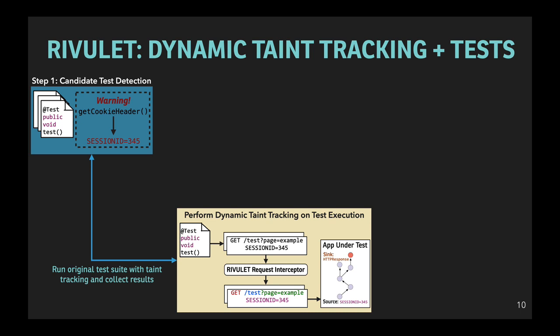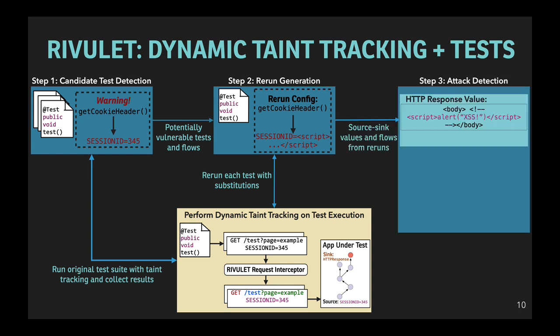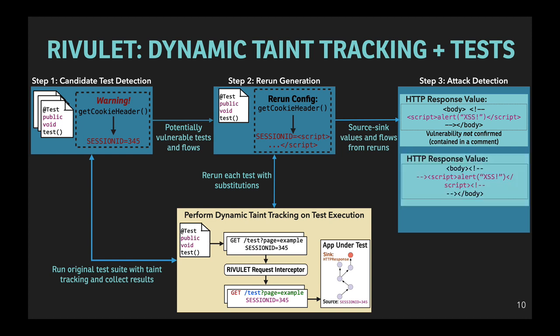So for each of these candidate tests, Rivulet then cleverly reruns them, but modifying the values supplied by the test case — in this case changing the session ID variable to an attack string. The modified test is executed again with taint tracking, and this time, if the new malicious input flows into the HTTP response, Rivulet examines the entire response to determine if an attack really occurred. This step is important because simply seeing tainted data flow to a vulnerable method call does not imply an attack. In the first example here, the attack string is contained in a comment, and hence not a successful attack. When Rivulet generates an attack string that does defeat the comment, however, the vulnerability is confirmed, and Rivulet generates a one-click reproduction script to help developers investigate the vulnerability.